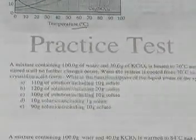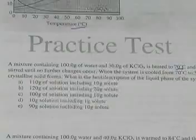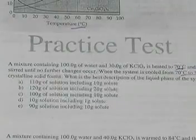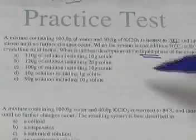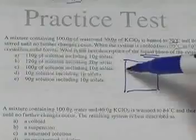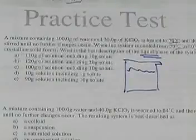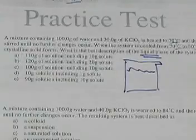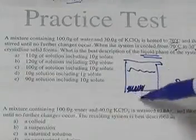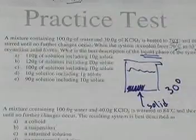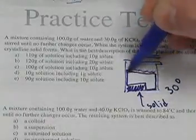Question number one: a mixture containing 100 grams of water and 30 grams of KClO₃ is heated to 70 degrees Celsius and thoroughly stirred until no other changes occur. When the system is cooled from 70 to 30 degrees, a white crystalline solid forms. What is the best description of the liquid phase of the system? The question is asking about the liquid portion that remains — not the solid.